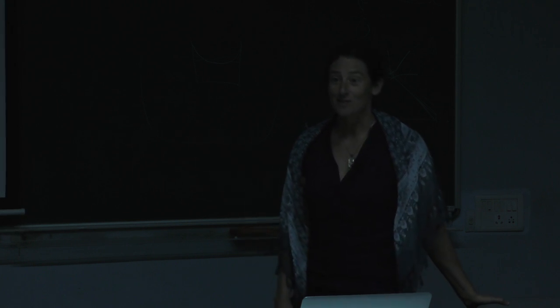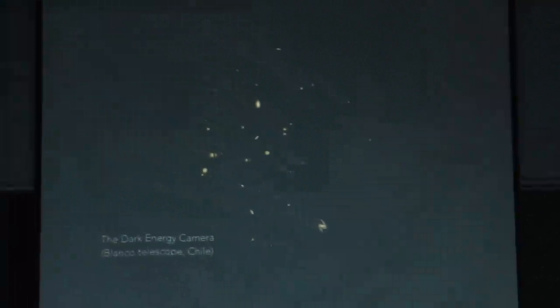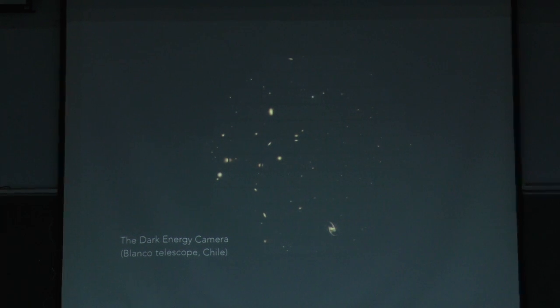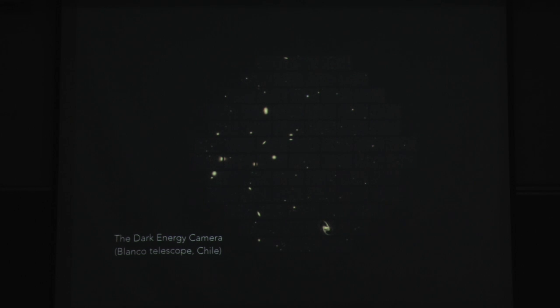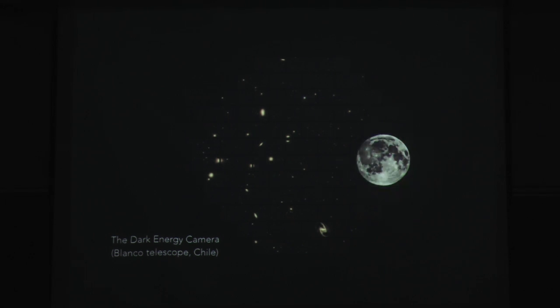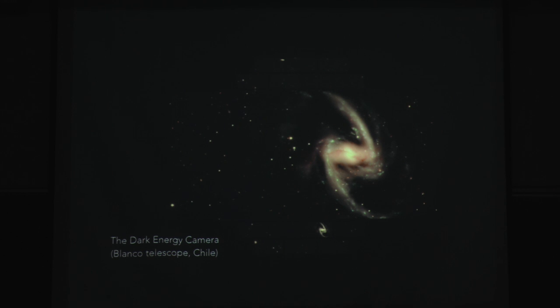So, this is an image from the Dark Energy Camera. This shows the plane. Each one of these is a different CCD camera. Just to give you a scope for the field of view, it's a really wide field camera. That's the size of the full moon in relation to the view of the camera. And to give you a measure of the detail with which we see things, that's a zoom in of one of the tiles to give you a sense of just how intricate these images are, despite the fact that we have such a wide field of view.